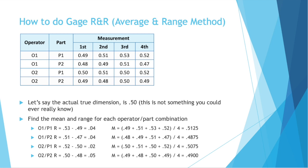First we need to find the mean and range for each operator part combination. So operator 1, part 1, the range is 0.04, and the mean is 0.5125. Operator 1, part 2, the range is 0.04 again, and the mean is 0.4875. And do the same for operator 2 with both parts.